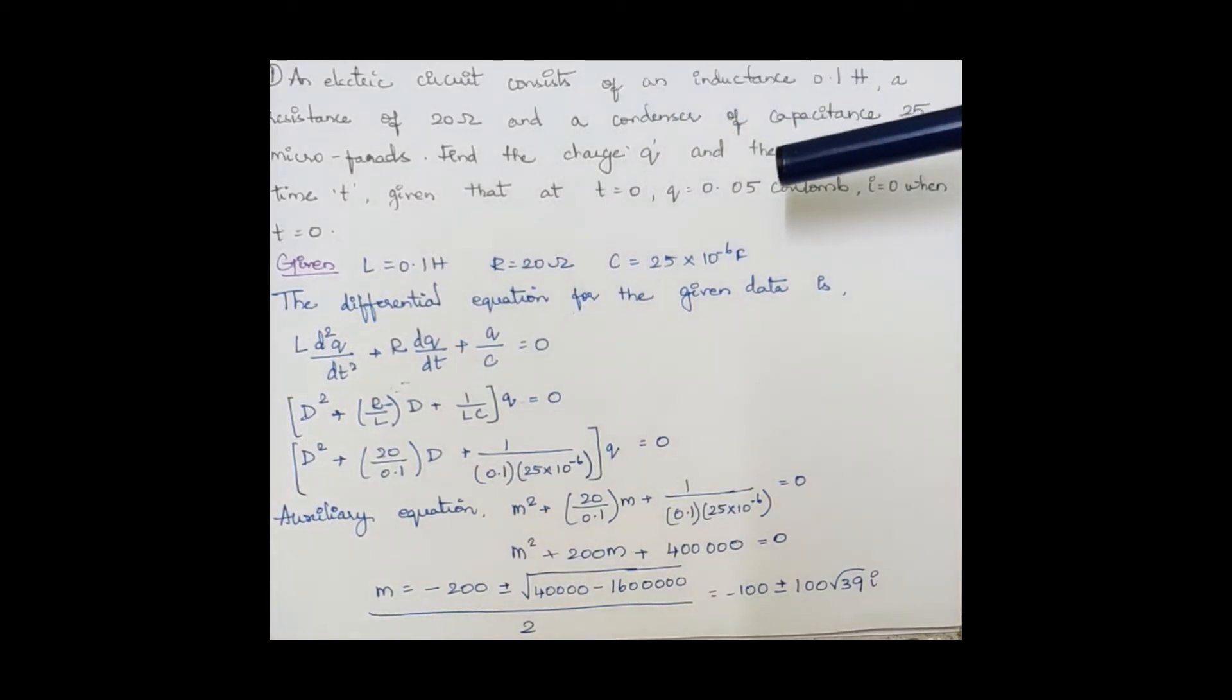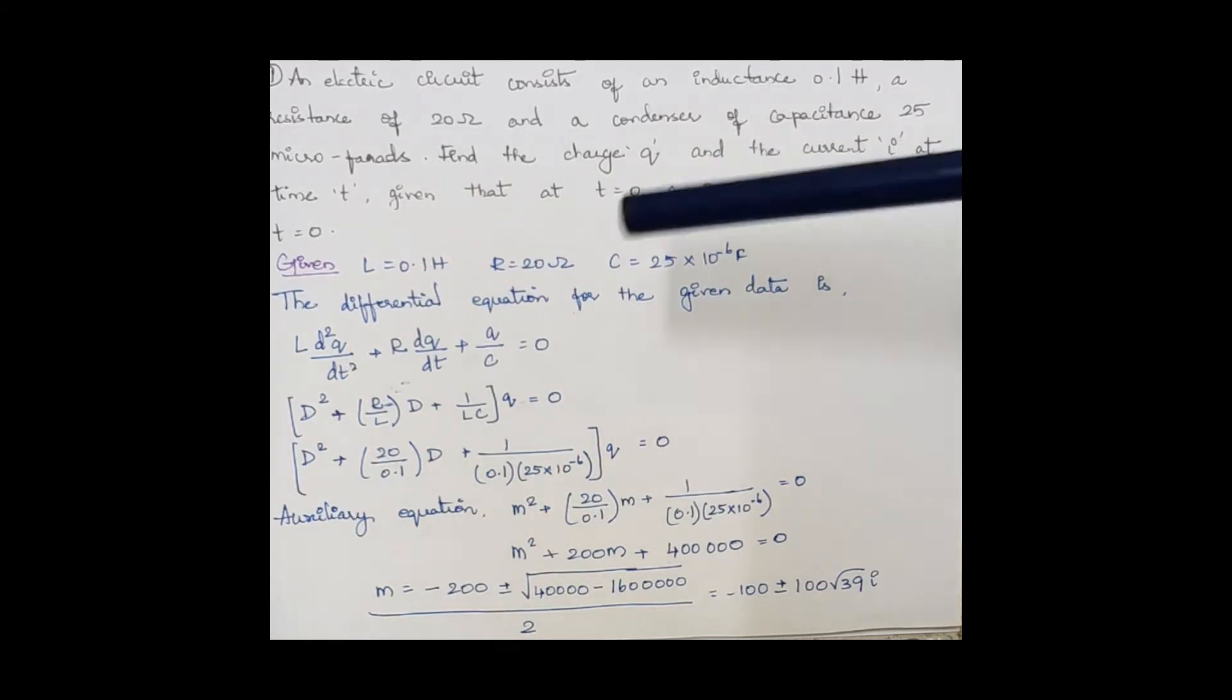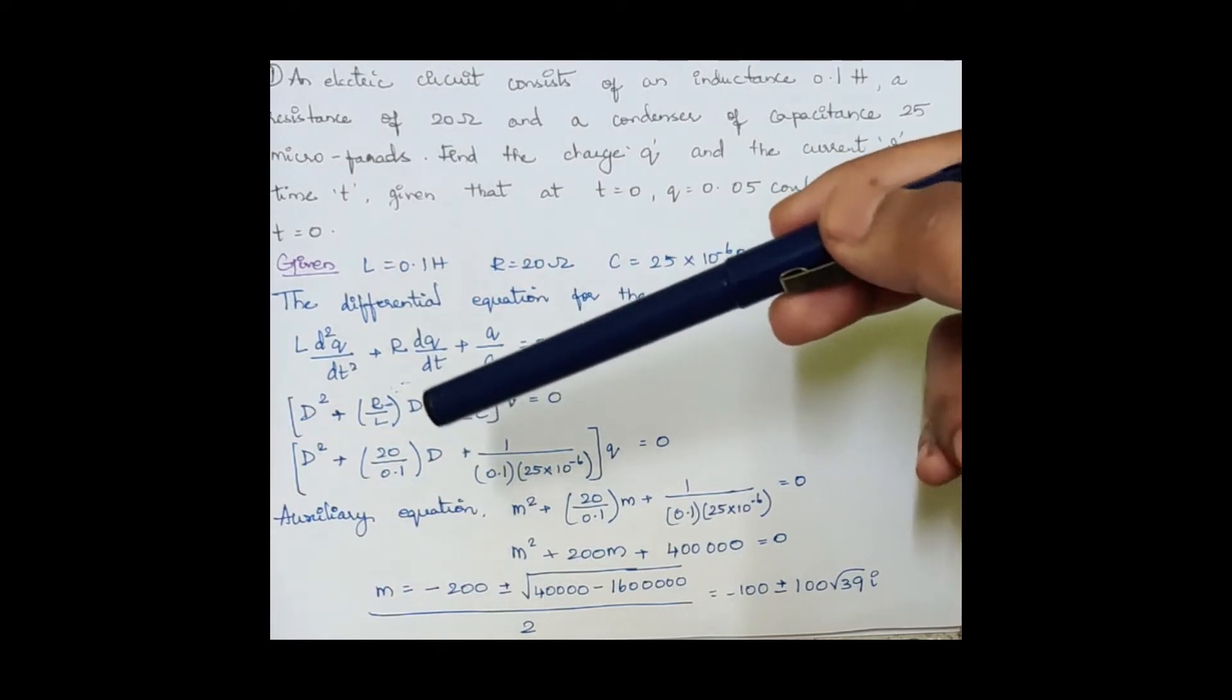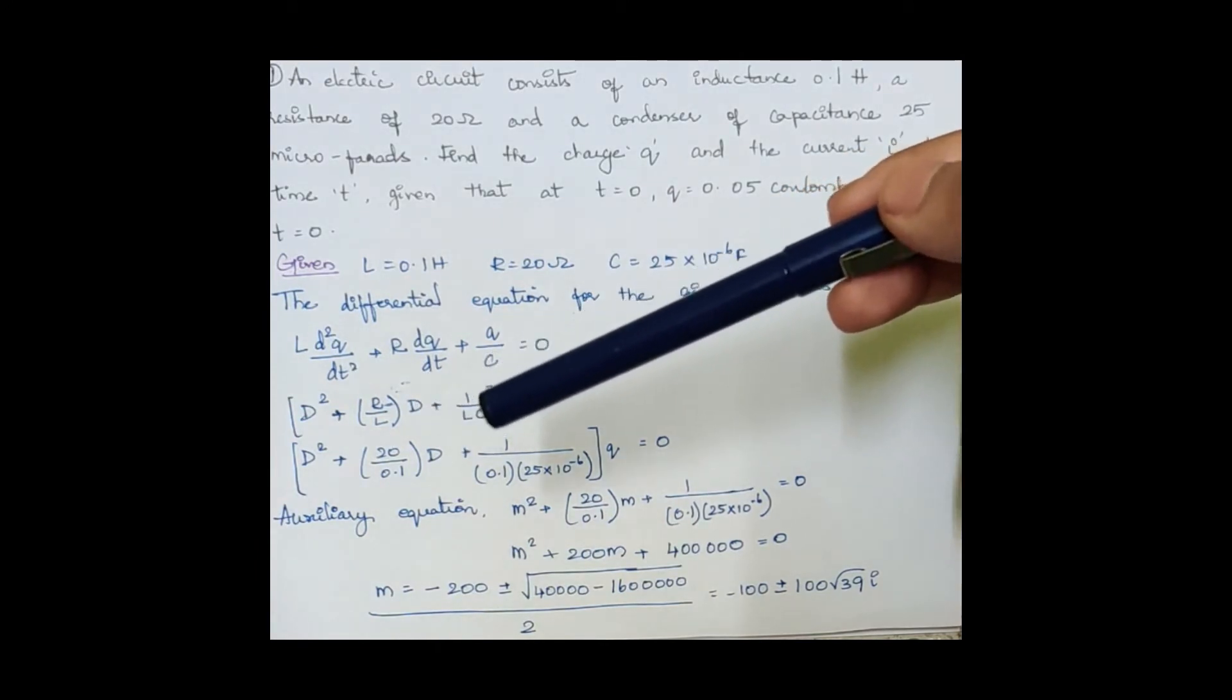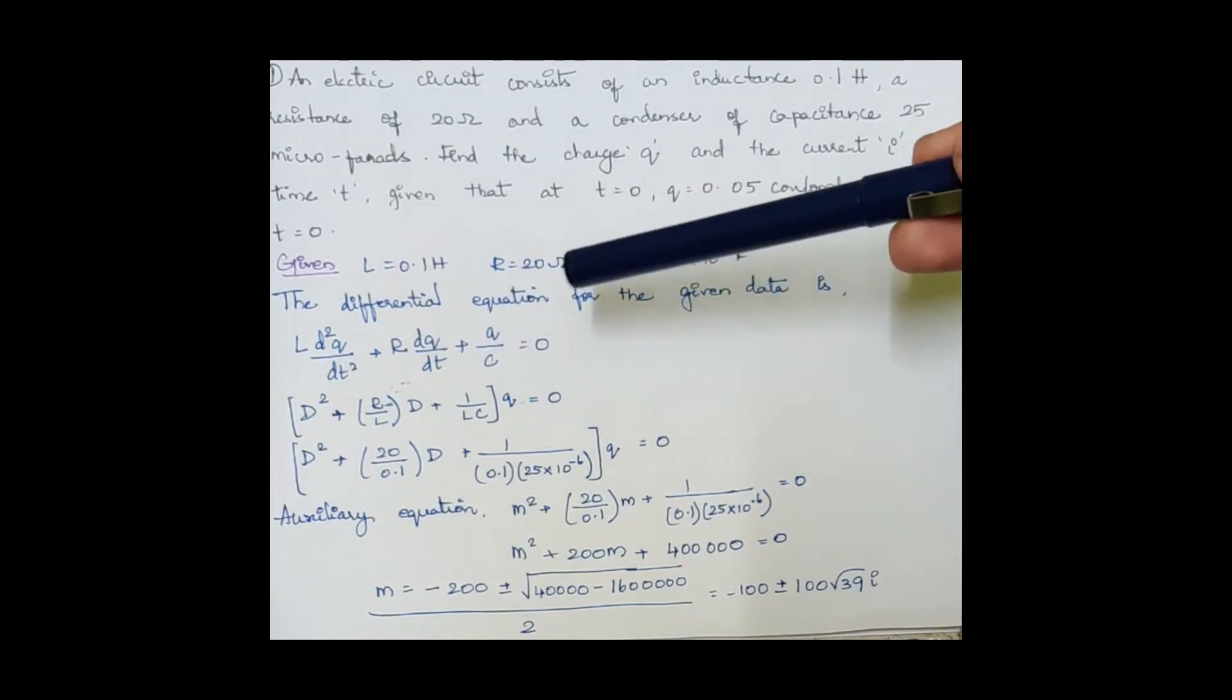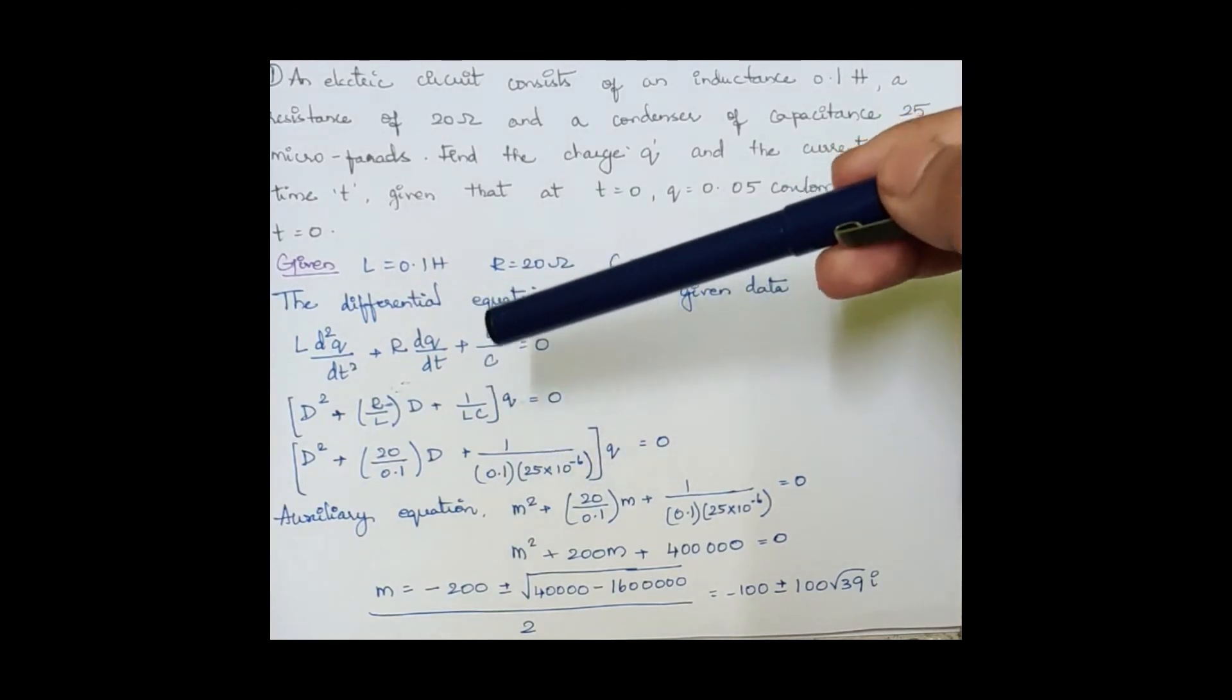We are given that at time t = 0, there is an initial condition: the charge is 0.05 coulombs and current is 0. These are the given parameters. The differential equation for the data is L(d²q/dt²) + R(dq/dt) + q/C = 0. When substituting, it becomes d²q/dt² + (R/L)(dq/dt) + (1/LC)q = 0.